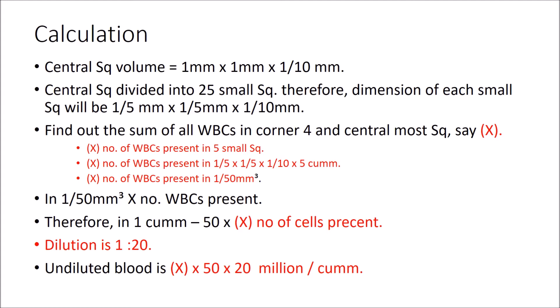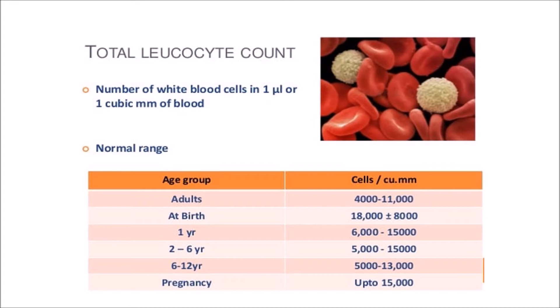Now we are going to see the normal range of total leukocyte count. In adult, 4000 to 11,000. At birth, 18,000 which can be calculated plus or minus 8,000. 1 year, 6,000 to 15,000. 2 years to 6 years, 5,000 to 15,000. 6 to 12 years, 5,000 to 13,000. In pregnancy up to 15,000 cells per cubic mm. So it may vary. But there is no difference between male have more, female have less like this with what we have discussed in RBC count. There is no gender difference, only age difference.